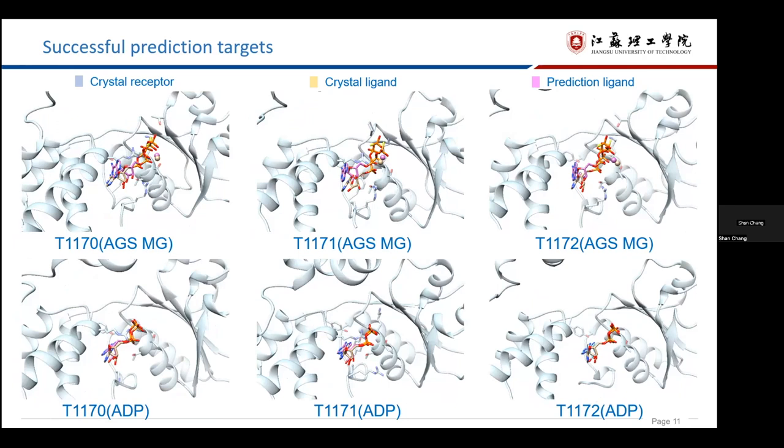T1170, H1171, and H1172 are all bound to the same ligands. The only difference is that H1171 and H1172 also have different oligomer states. So we only analyzed one of them. And we can see that AGS, ADP, and magnesium ions have been predicted correctly.